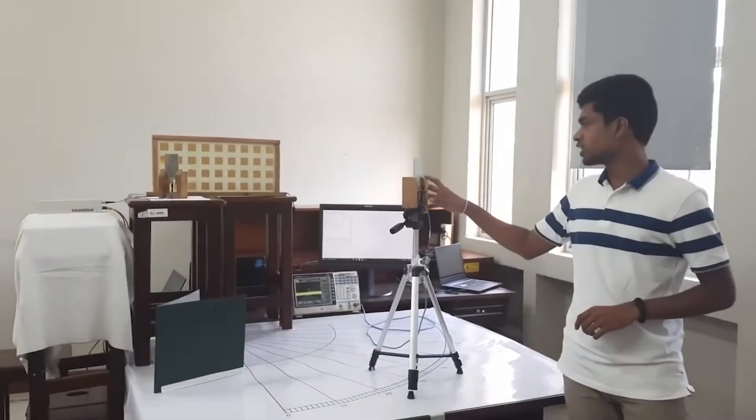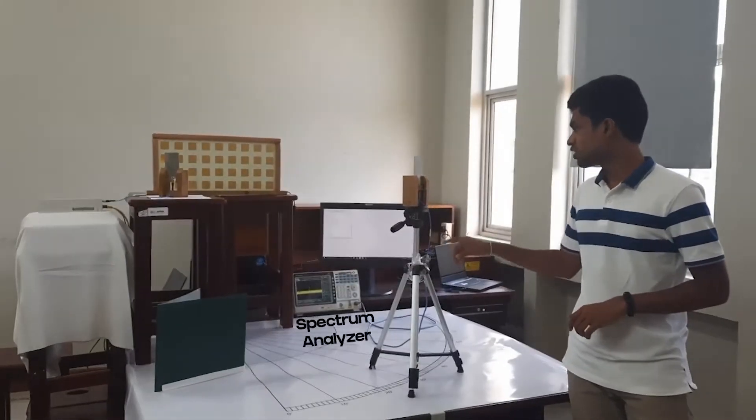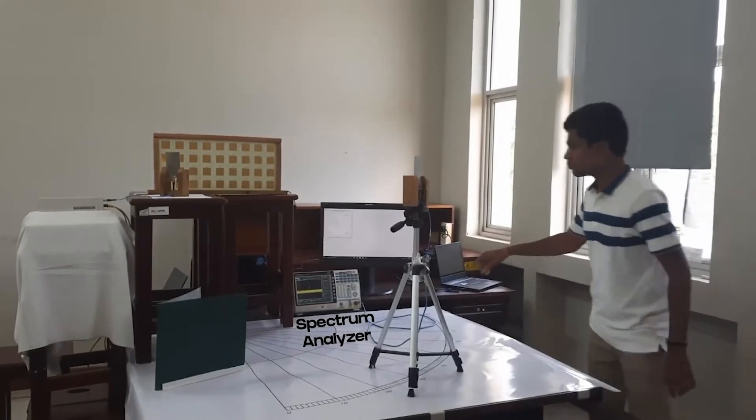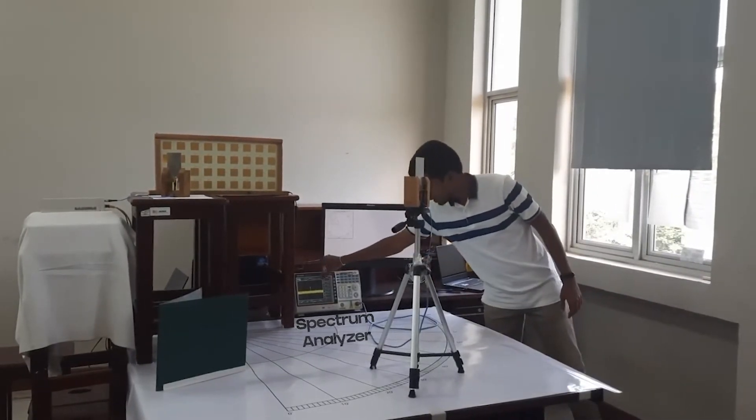We use the USRP instrument for the transmitter. Using GNU Radio, we configure the USRP. This is the receiving antenna. We connect the receiving antenna to a spectrum analyzer to measure the power of the receiving signal.